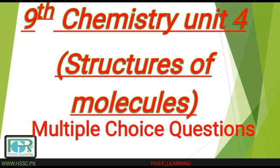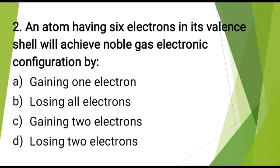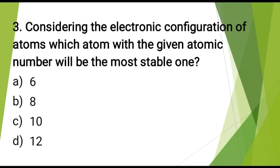Unit No. 4 Multiple choice questions. Atoms react with each other because? The correct answer is: they want to attain stability. An atom having 6 electrons in its valence shell will achieve noble gas electronic configuration by? The correct answer is: gaining 2 electrons. Considering the electronic configuration of atoms, which atom with the given atomic number will be the most stable one? The correct answer is: 10.